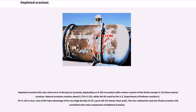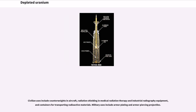Uses of DU take advantage of its very high density of 19.1 grams per cm³, 68.4% denser than lead. The less radioactive and non-fissile uranium-238 constitutes the main component of depleted uranium. Civilian uses include counterweights in aircraft, radiation shielding, medical radiation therapy and industrial radiography equipment, and containers for transporting radioactive materials. Military uses include armor plating and armor-piercing projectiles.